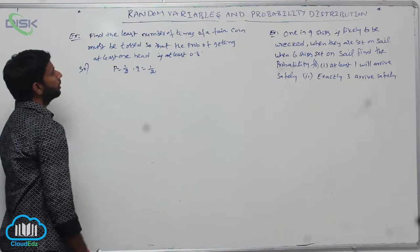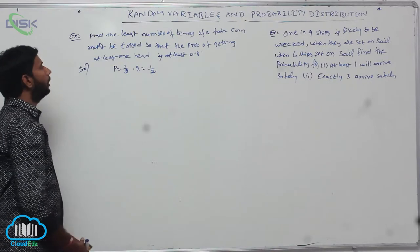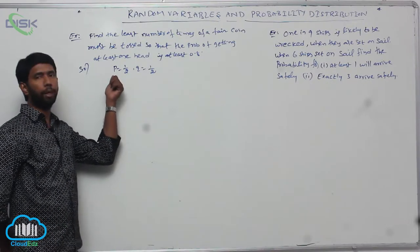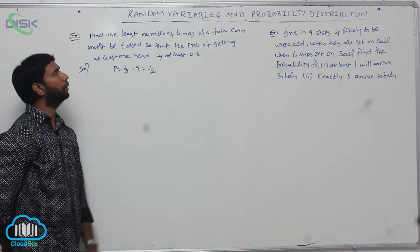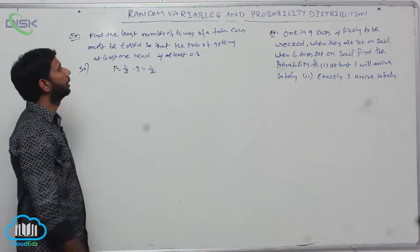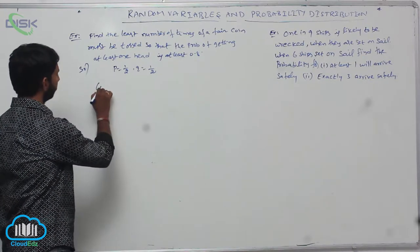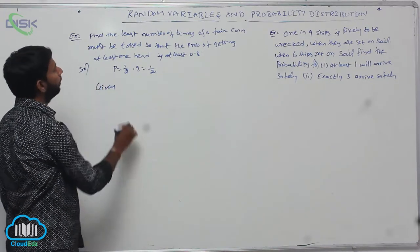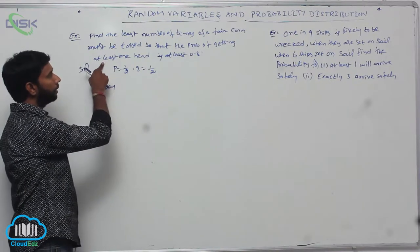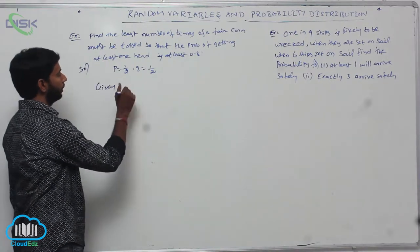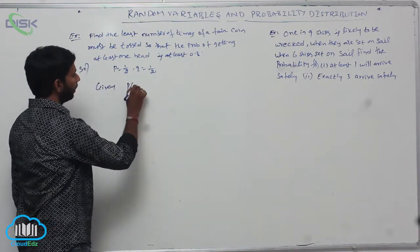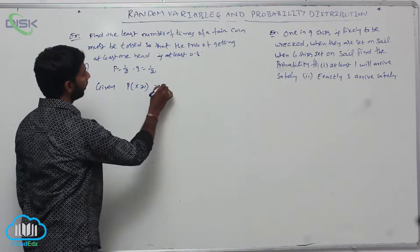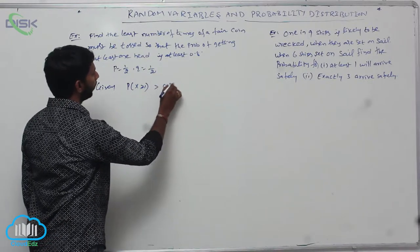If the coin is tossed, the probability for head and the probability for tail is P equal to 1 by 2, Q equal to 1 by 2. The given condition is: the probability of getting at least one head, that is P of X greater than or equal to 1, is greater than or equal to 0.8.